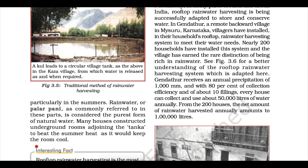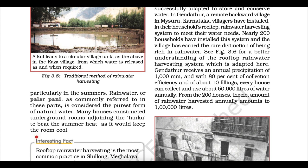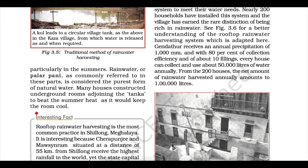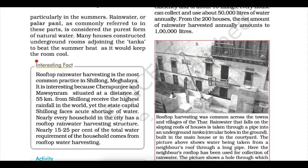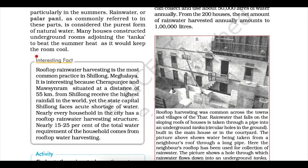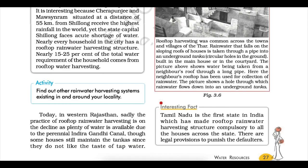Many houses constructed underground rooms adjoining the tanka to beat the summer heat, as it kept the room cool. Rooftop rainwater harvesting is a very common practice in Shillong, Meghalaya. Interestingly, Cherrapunji and Mawsynram — situated about 55 kilometres from Shillong — receive the highest rainfall in the world, yet the state capital Shillong faces acute water shortage. Nearly every household in the city has a rooftop rainwater harvesting structure, and 15 to 25 percent of the total water requirement of households comes from it.